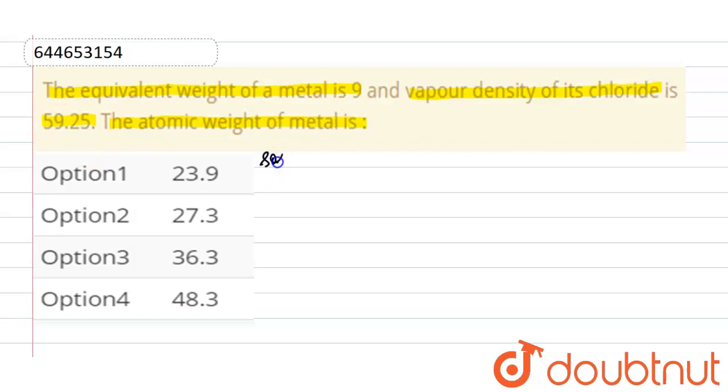Let's see the solution. Firstly, we will write what is given in the question: equivalent weight of metal is 9, vapor density of its chloride or vapor density of metal chloride is 59.25.